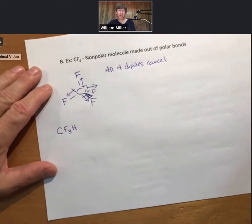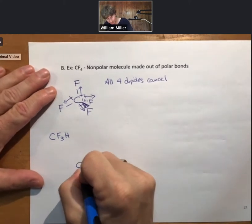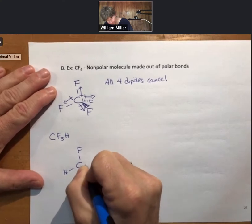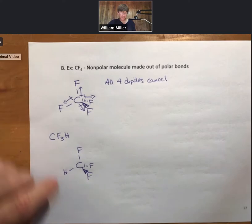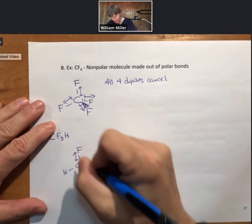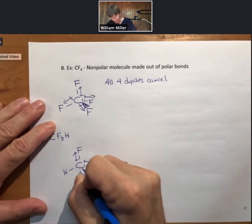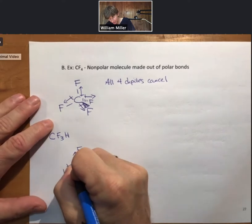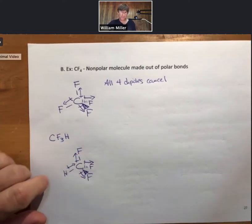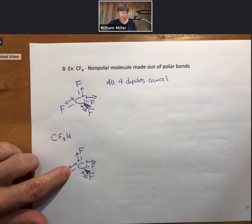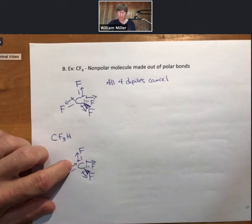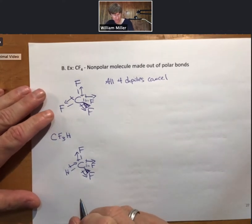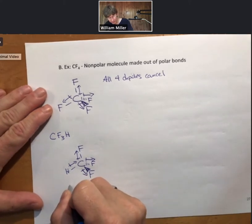A slightly different molecule, CF3H. Three dipoles pointing towards the three F's. Hydrogen less electronegative points towards carbon. Much easier to see that these dipoles do not cancel, or let's say do not completely cancel. There's partial cancellation. So this one is a polar molecule.